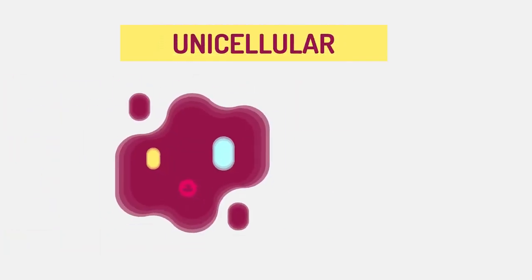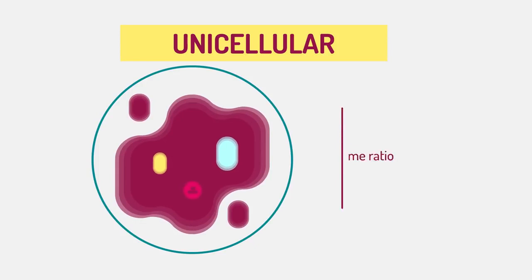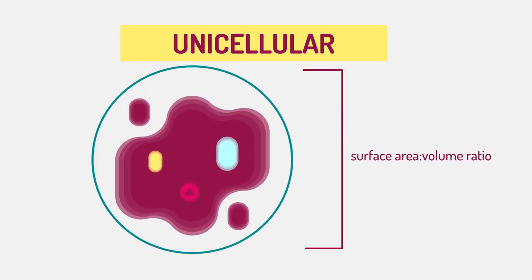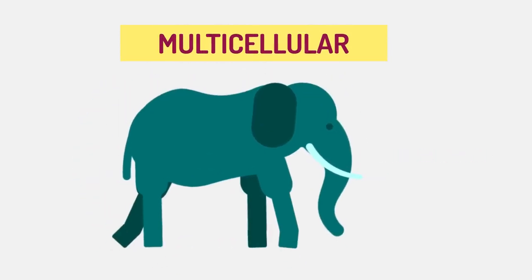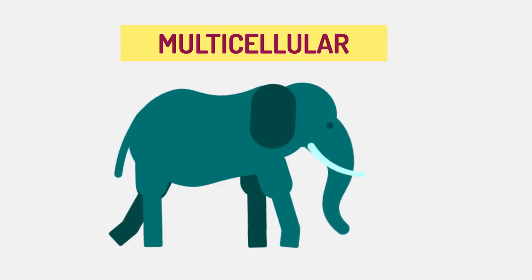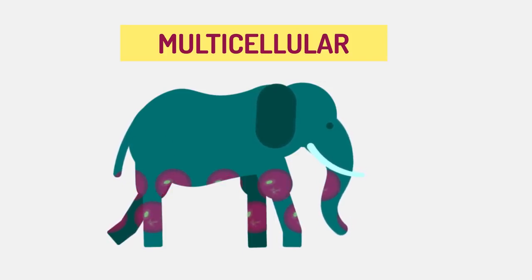Unicellular organisms cannot grow large because they are limited by a surface area to volume ratio, whereas multicellular organisms can increase the number of small cells to give a large size overall.